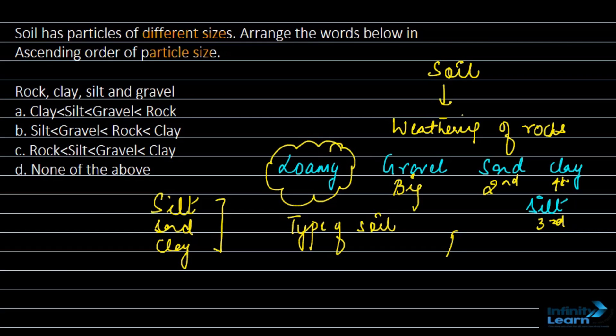And if I talk about rock, rocks are quite bigger in size. So that means out of these four, the biggest one is the rock. And second number, gravel, second more bigger. And third, sand. And then we have silt. And last, clay is the smallest one.